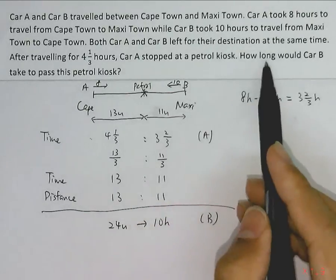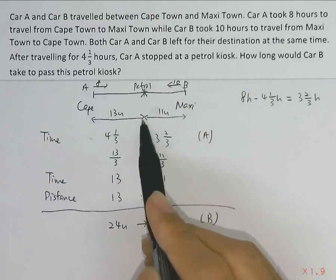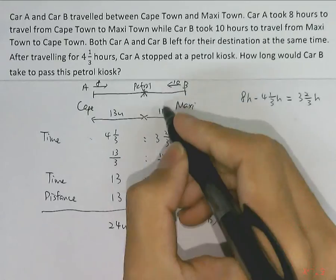So now the question asks for, how long car B will take to travel from Maxi Town to the petrol kiosk? And that distance is 11 units.